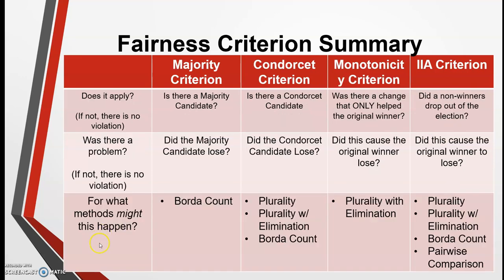Remember that there are only certain methods where these violations can occur. For the majority criterion, the Borda count is the only place it can occur — so if you have a majority criterion being applied to a plurality method election, you don't even have to check because there's no chance the majority criterion can be violated. For the Condorcet criterion, three of the four methods can provide a violation. For the monotonicity criterion, only one — plurality with elimination. And for the IIA, all four of the methods we have studied can produce a violation. Use this chart to see if criteria apply, and if so, whether they have been violated.